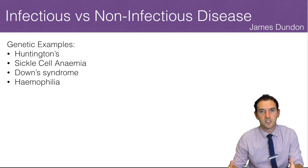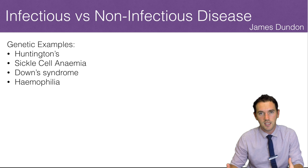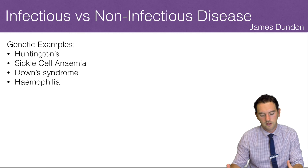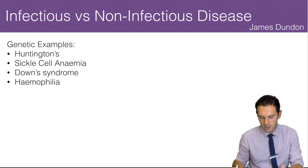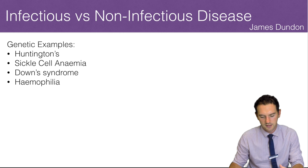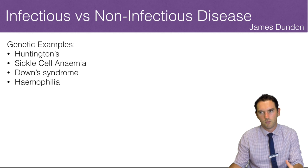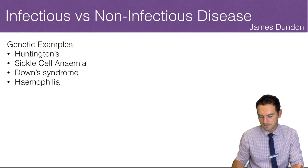So for example, genetic disorders — these are things that are passed on in your DNA from your parents, and they generally might run in a family. We've got Huntington's disease, sickle cell anemia, Down syndrome — although Down syndrome is probably more of a disorder than a disease — and hemophilia.